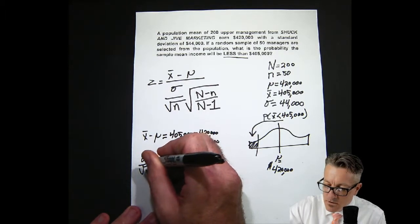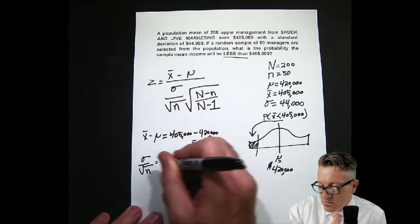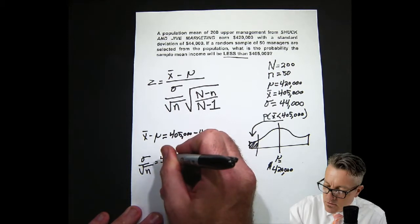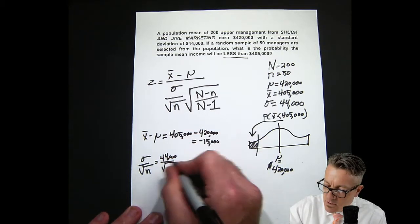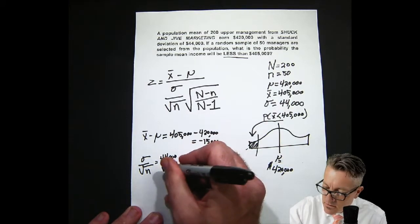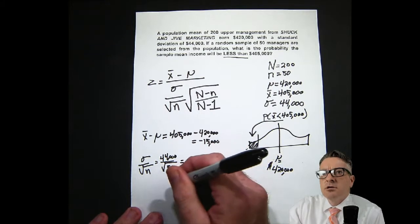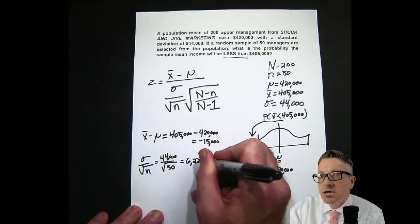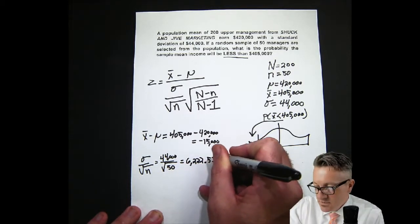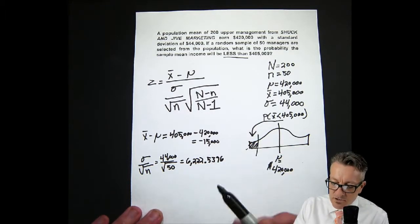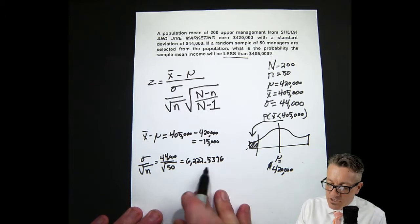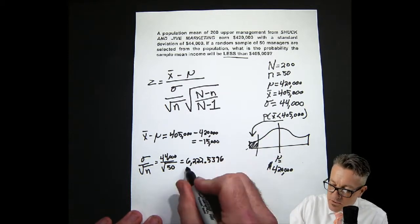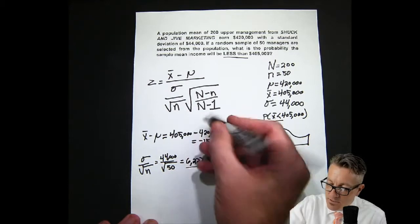Now I'll calculate the standard error of X — that's sigma over the square root of little n. Our sigma is $44,000 over the square root of 50, and the answer is $6,222.5396. A common question is how far to round — when in doubt, go out to four decimal places.